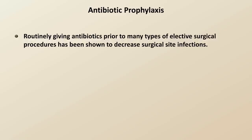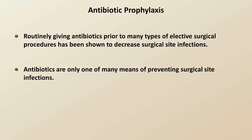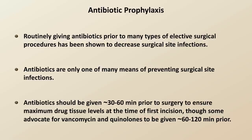I'll now switch topics to discuss antibiotic prophylaxis. Routinely giving antibiotics prior to many types of elective surgical procedures has been shown to decrease surgical site infections. Antibiotics are only one of many means of preventing surgical site infections — other essential practices include preoperative skin cleansing with chlorhexidine or iodine, use of barrier devices by OR staff such as masks, caps, gowns, and shoe covers, surgical hand hygiene, and good general surgical technique. Antibiotics should be given about 30 to 60 minutes prior to surgery to ensure maximum drug tissue levels at the time of first incision, though some advocate for vancomycin and quinolones to be given closer to 60 to 120 minutes prior.